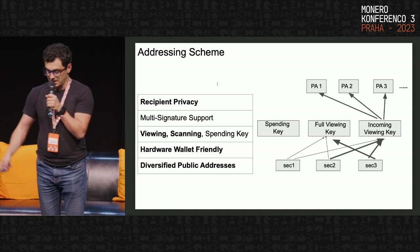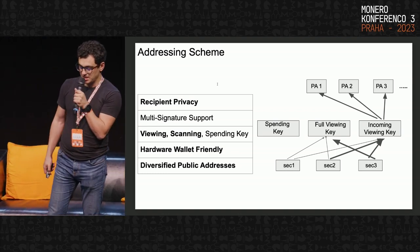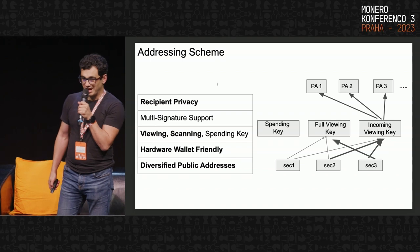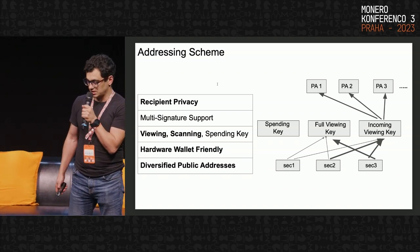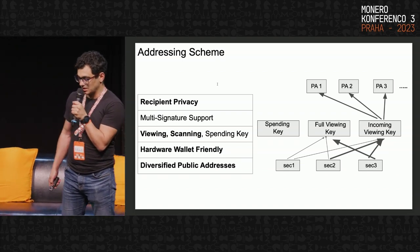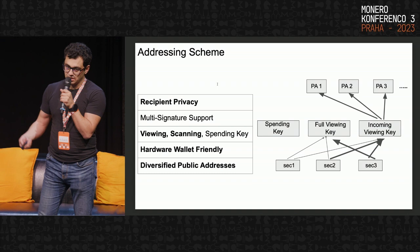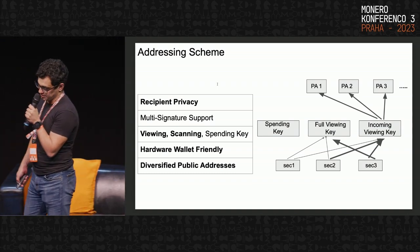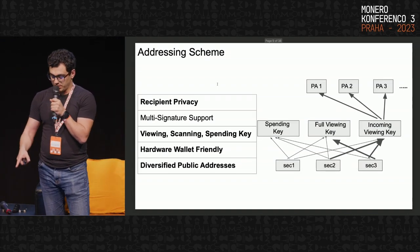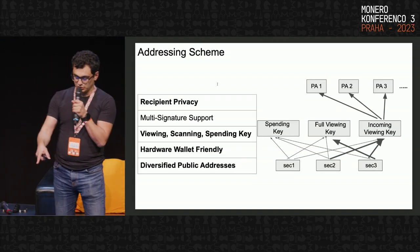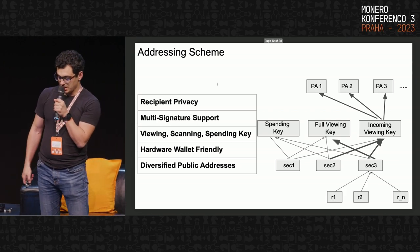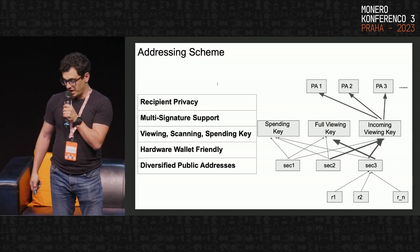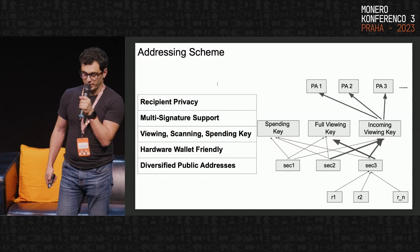The last key, called the spending key, is used only for very lightweight operations to finalize the ownership proofs. It can be stored on hardware wallets. The component used to generate the spending key can be derived through multi-signature operations.